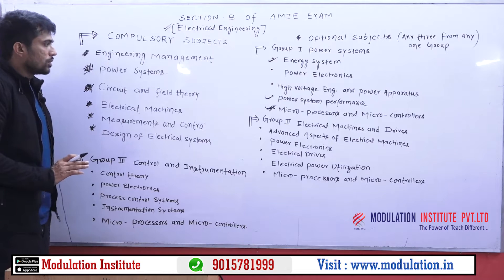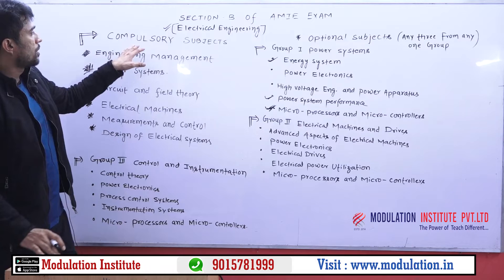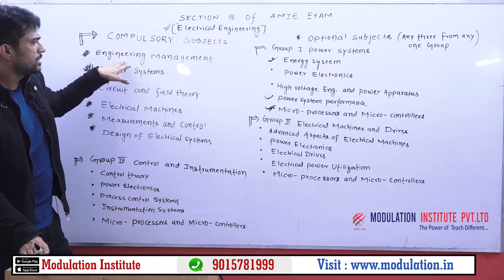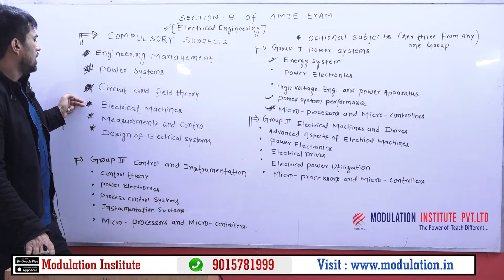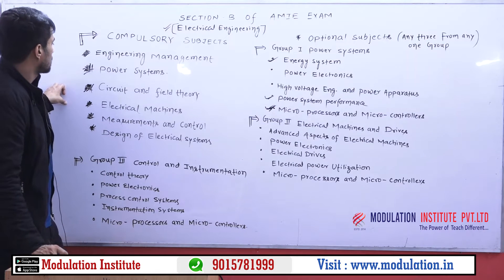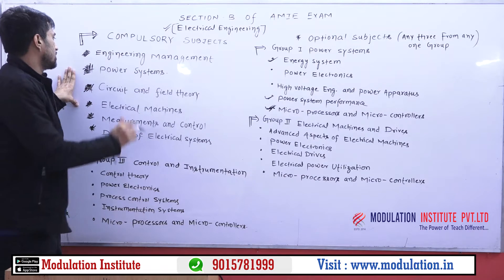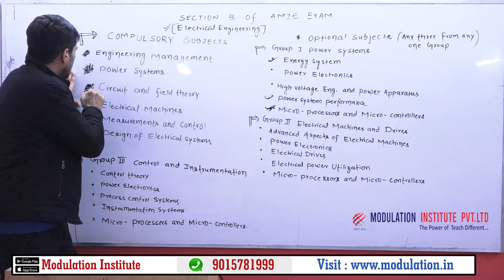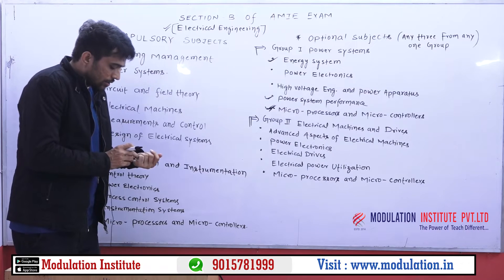To conclude the important points: from the compulsory and optional subjects, six are compulsory. Engineering management is the easy one. The subjects that will take more time are circuit and field theory, electrical machines, measurement and control, and design of electrical systems — all very important and requiring much depth. You have to give more and more time to these six compulsory subjects because you cannot avoid any of them.